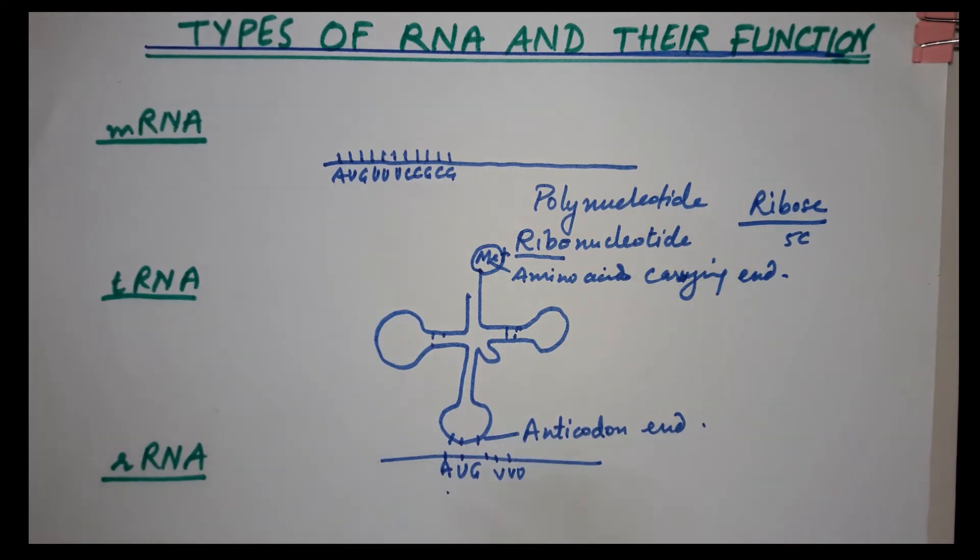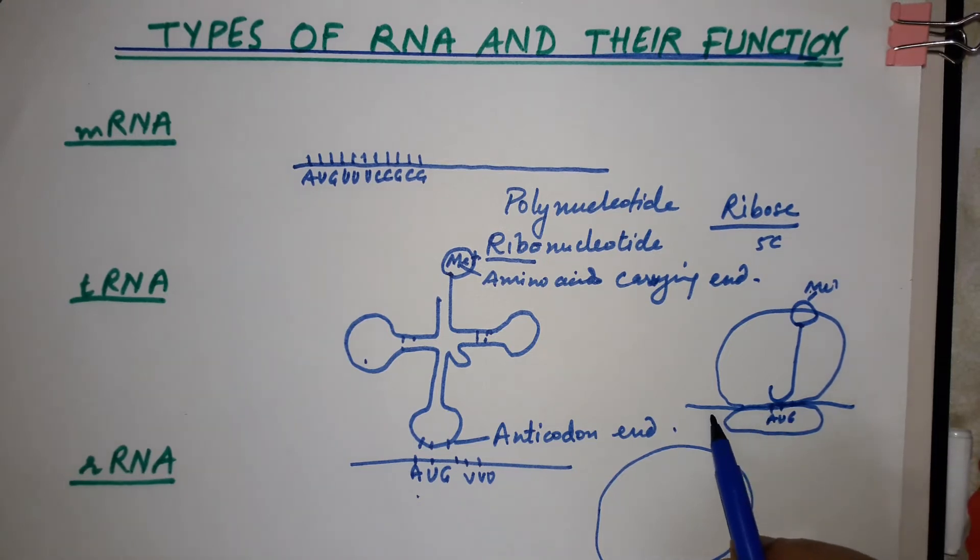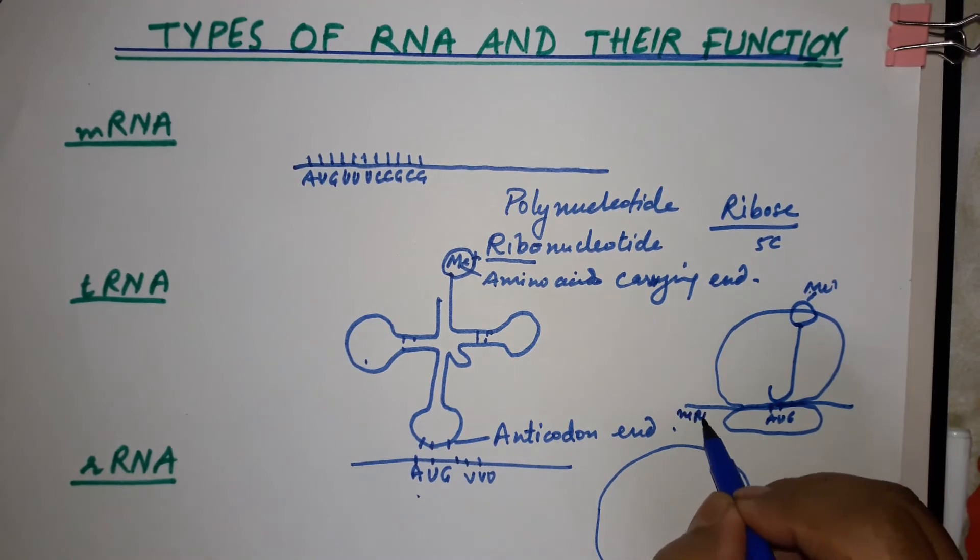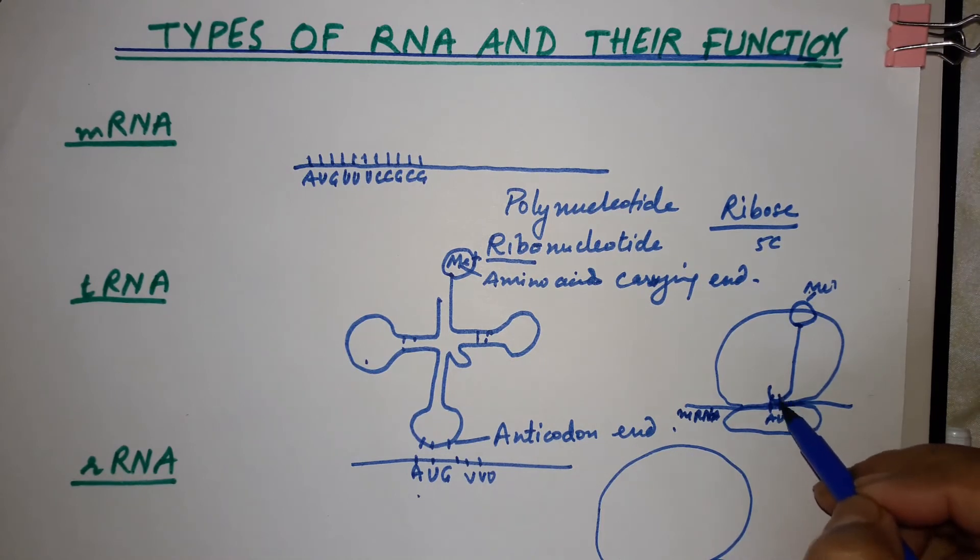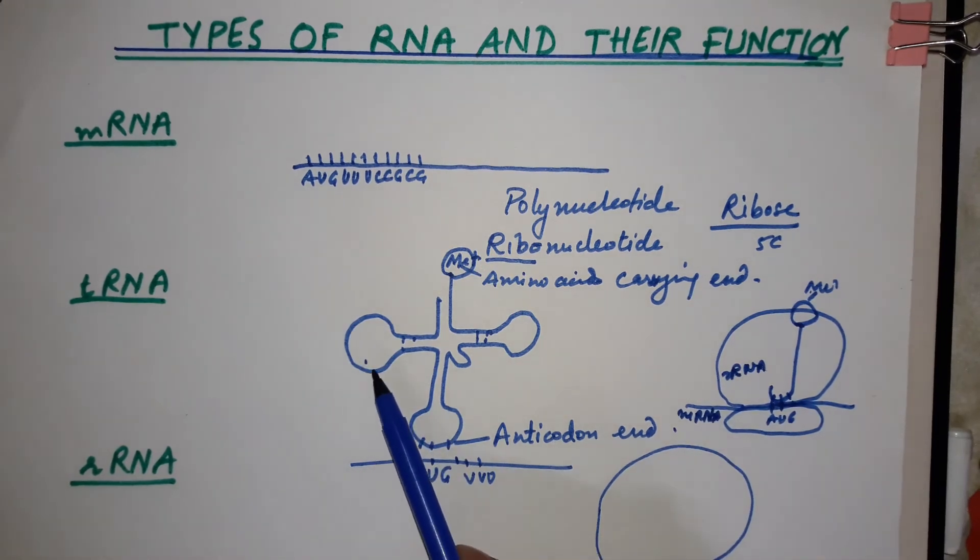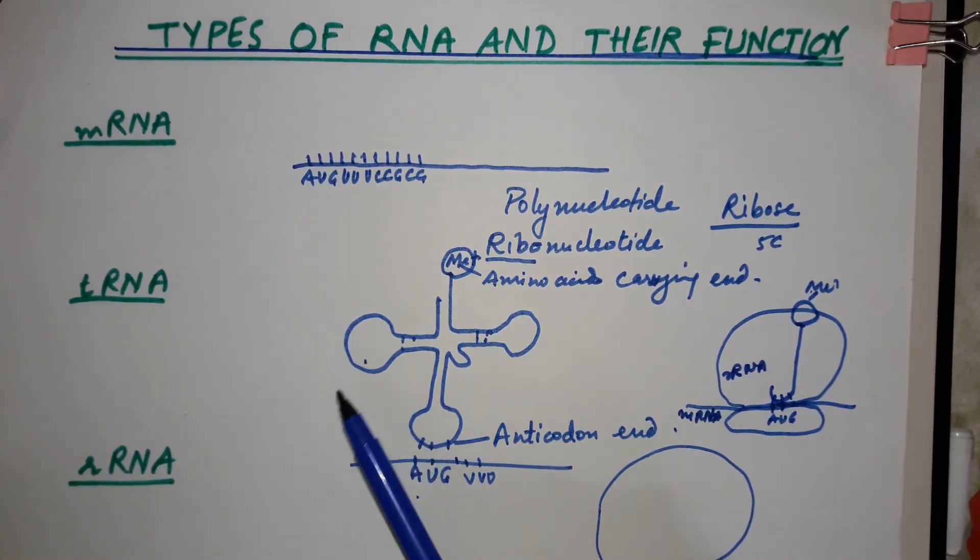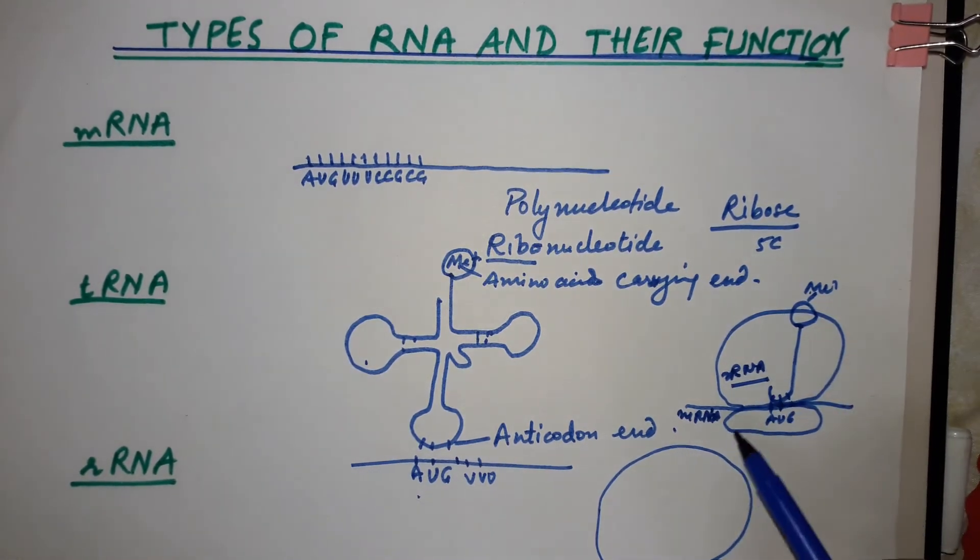The third RNA is ribosomal RNA. Ribosomes have two subunits. Both subunits interact with messenger RNA, and the ribosomal RNA helps in the fitting and attachment of these components together.